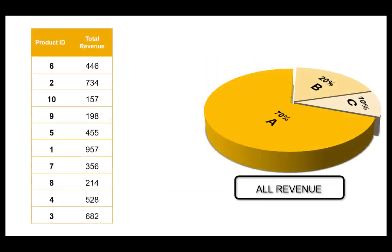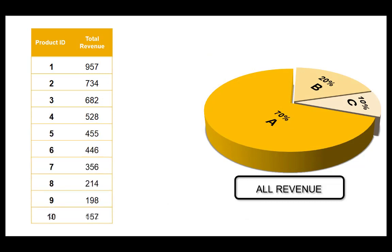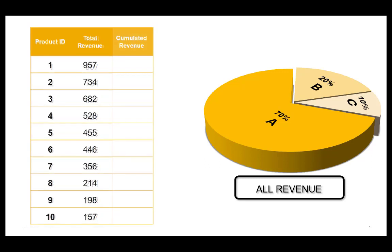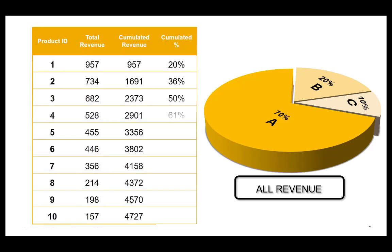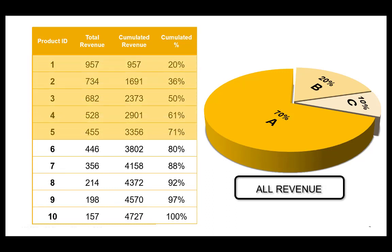If you now run segmentation, the system sorts the items in descending order based on the percentage of the revenue produced by each and calculates the accumulated values and percentages. The item passing the threshold always belongs to the previous segment, so these five products that bring in 70% of the revenue will be assigned to segment A. These three produce the next 20%, so they'll belong to segment B, and the rest will be in segment C.